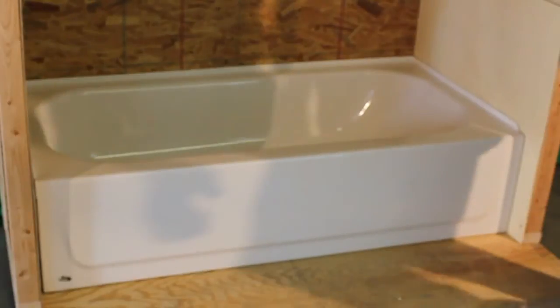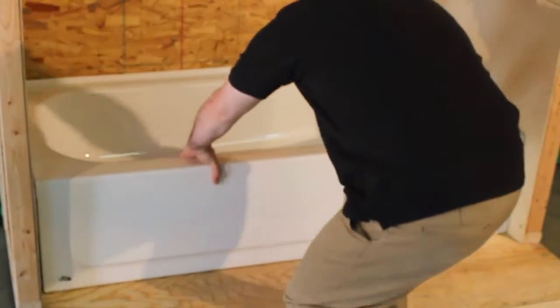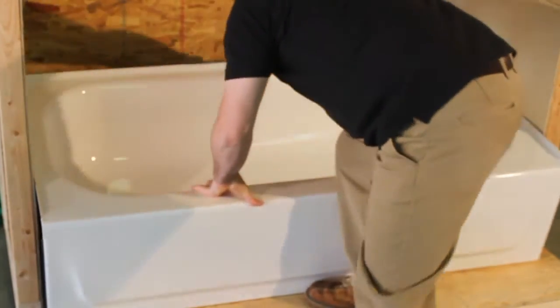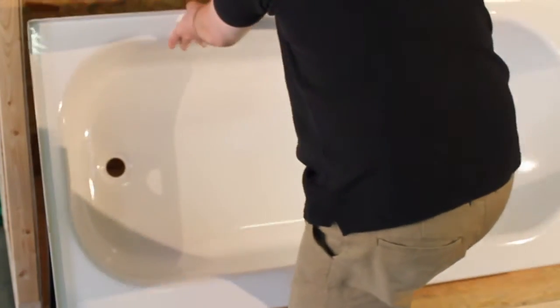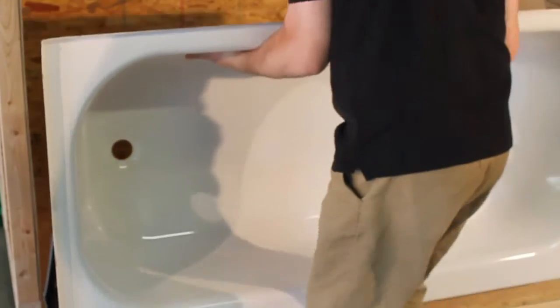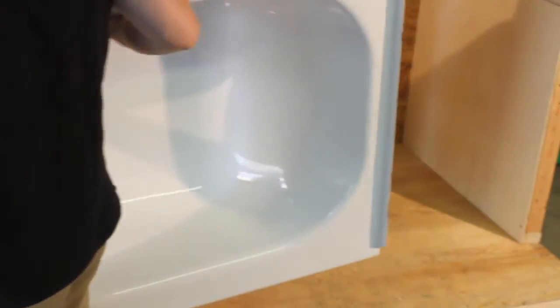A tub to shower conversion is one of the most common renovations. You'll install a standard fusion shower pan in a typical bathroom, in the space that now holds a five foot long bathtub. First, remove the tub from the space.